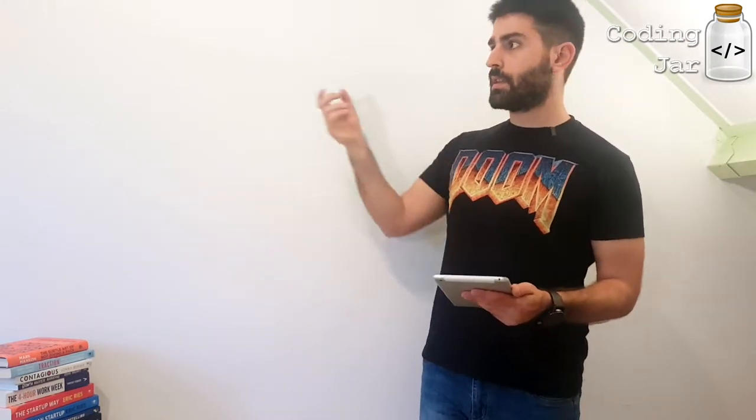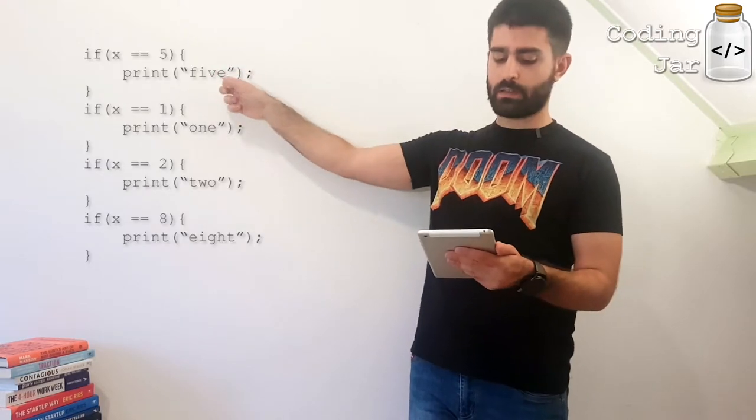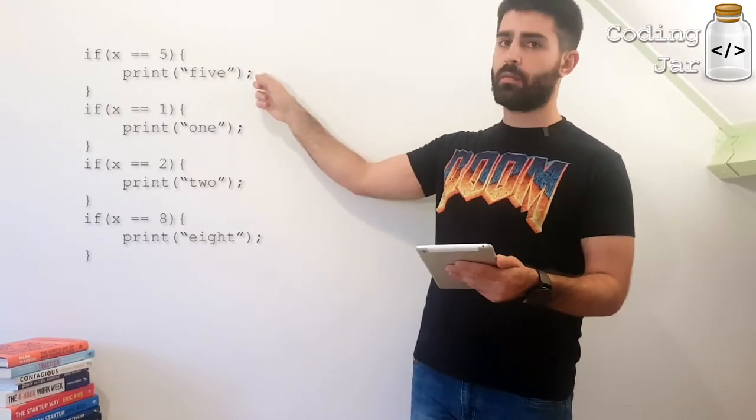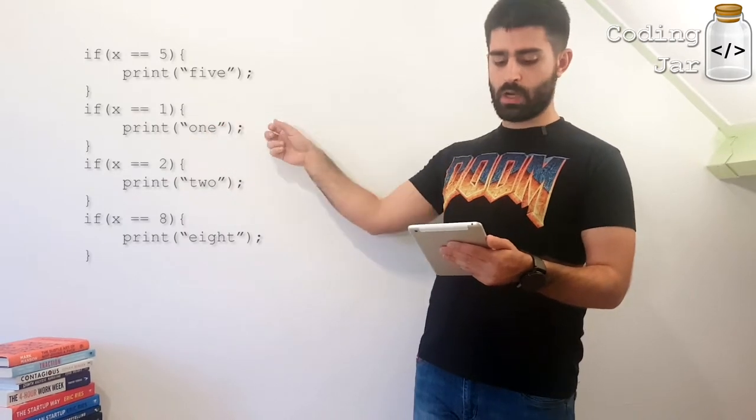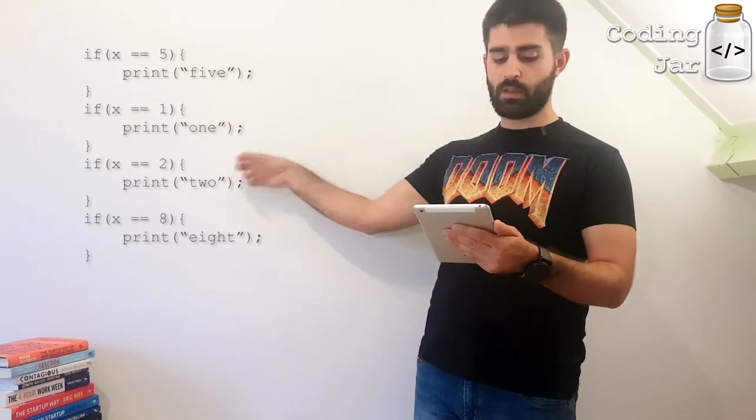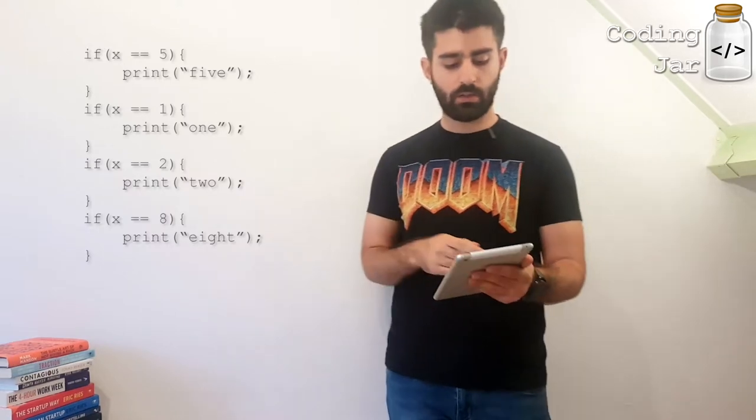So now we have the switch statement. The switch statement works, in essence, as a series of if statements. Instead of going if x equals 5, then print 5, if x equals 1, then print 1, if x equals 2, print 2, if x equals 8, print 8, you can do the following.